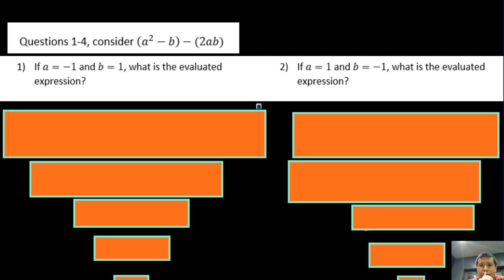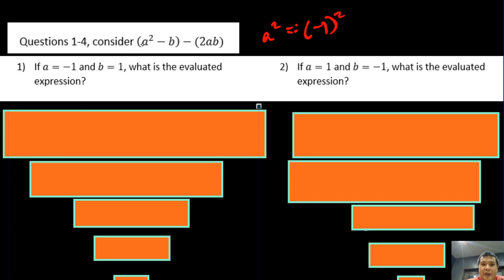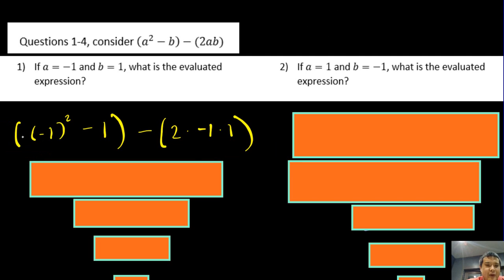Now consider the expression a² minus (b) minus (2ab). If a equals negative 1 and b equals negative 2, what is the evaluated expression? Notice that a is being squared, so all of a — including the negative — gets squared. We substitute to get (negative 1)² minus (negative 2) minus (2 times negative 1 times negative 2).